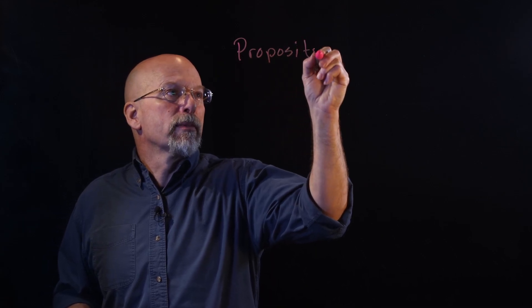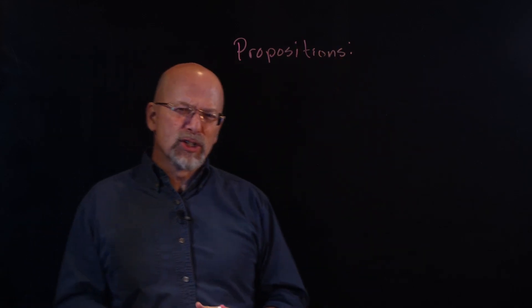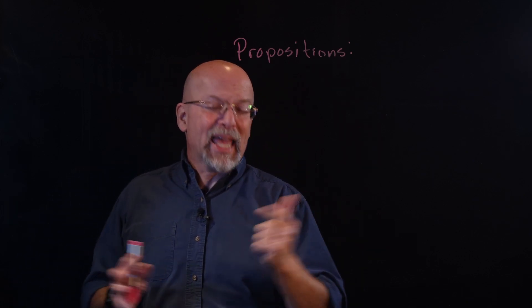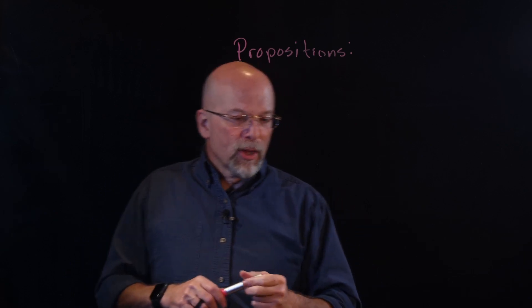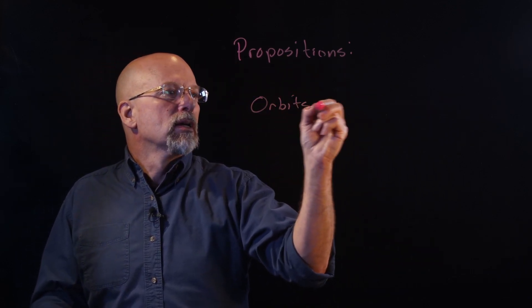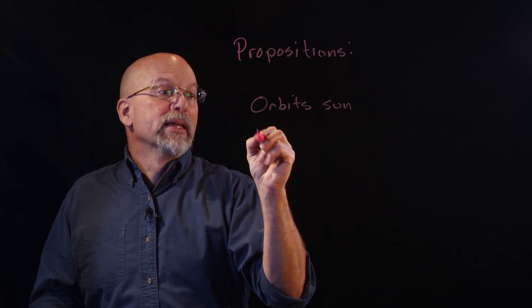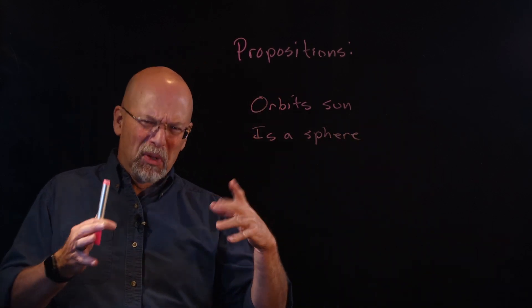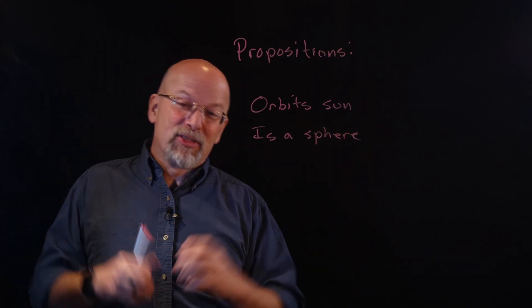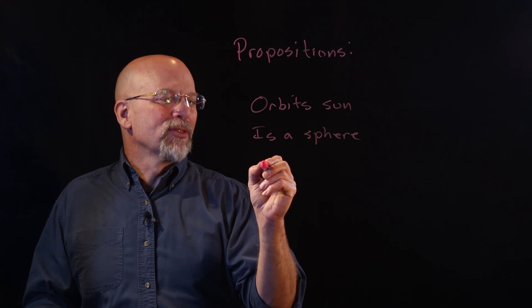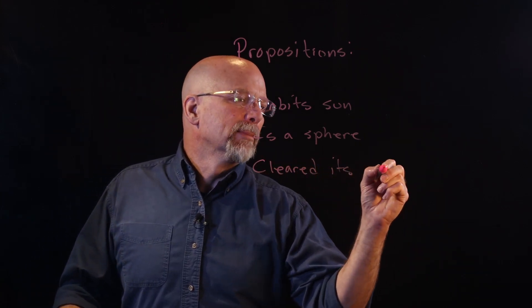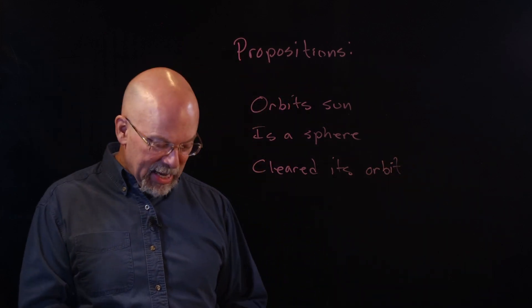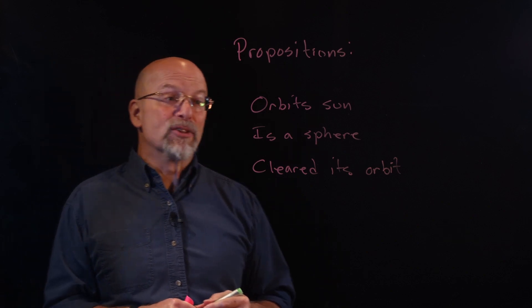Well, it turns out that these things are called declarative statements or propositions. Now, what is a proposition? A proposition is something that is either true or false but cannot be both. So each one of those, let's go ahead and write these down: orbits Sun, is a sphere, and has cleared its orbit. Each one of these is referred to as a proposition. It is either true or false.